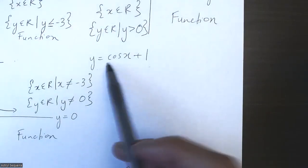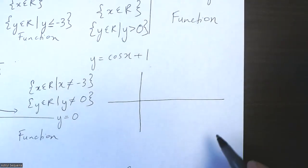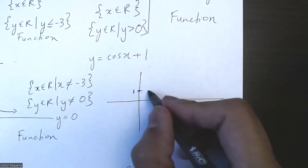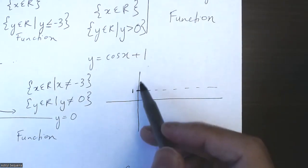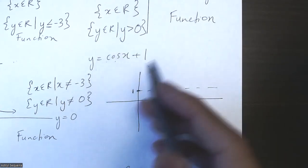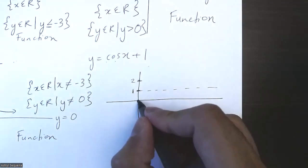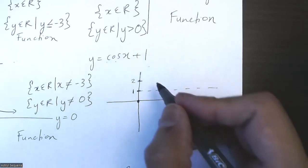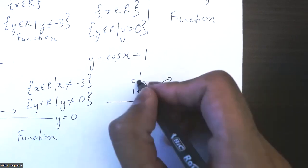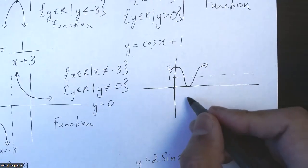The next one is a cosine graph that has been shifted up by one unit, so my axis of symmetry is at y = 1. A regular cosine graph has an amplitude of one, so my maximum is going to be two and my minimum is going to be zero. A cosine graph starts at its maximum, so this is what my cosine graph looks like, and it continues forever in both directions.